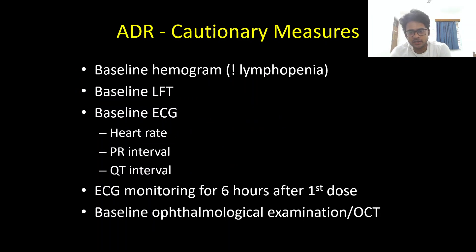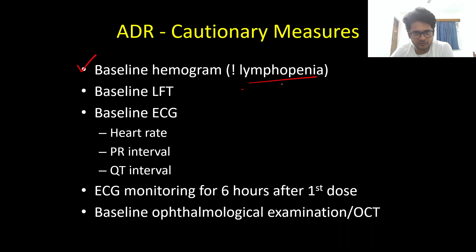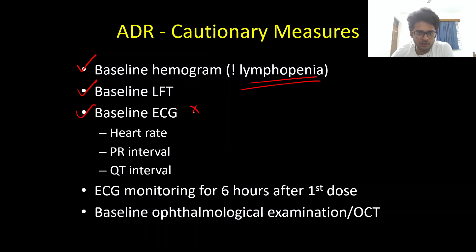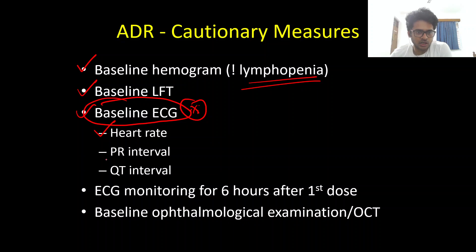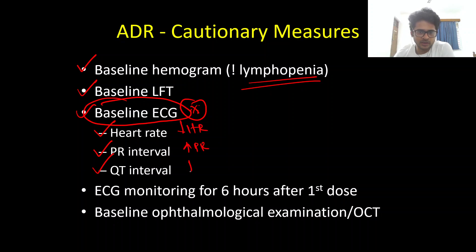Given the many adverse events, several cautionary measures are needed. It is vital to obtain a baseline hemogram, since lymphopenia is an expected side effect, and a baseline LFT because the patient can have an asymptomatic rise in liver enzymes. Most importantly, a baseline ECG is required — please ensure the patient has no bradycardia, no AV blocks, no PR prolongation, and no QTc prolongation before starting Fingolimod.